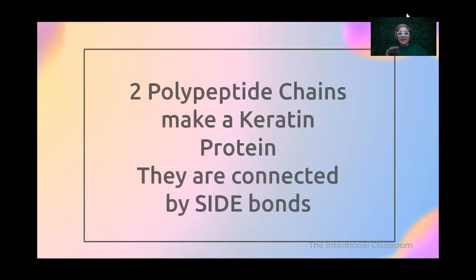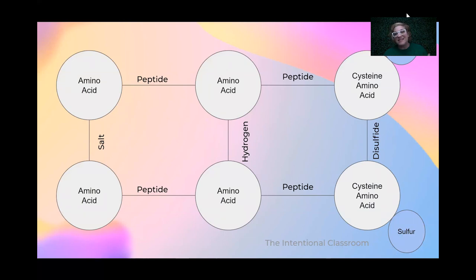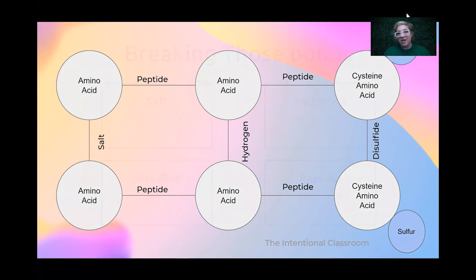Two polypeptide chains line up with each other and connect through something called side bonds, because one chain connects to the side of another chain. There are three different types of side bonds: salt, hydrogen, and disulfide. The disulfide bond always attaches two cysteine amino acids together, because disulfide means two sulfurs — two cysteine amino acids. Hydrogen and salt can connect as long as it's a negative and a positive coming together — they can connect all different types of amino acids.